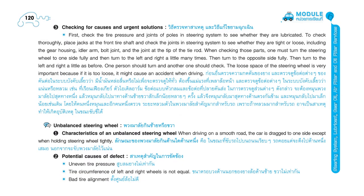Checking for causes and urgent solutions. First, check the tire pressure and joints of poles in the steering system to see whether they are lubricated. To check thoroughly, place jacks at the front tire shaft and check the joints in the steering system — including the gear housing, idler arm, bolt joint, and the joint at the tip of the tie rod — to see whether they are tight or loose. Turn the steering wheel to one side fully, then turn left and right a little, many times, then turn to the opposite side fully. One person should turn and another should check. The loose space of the steering wheel is very important because if it is too loose, it might cause an accident when driving.